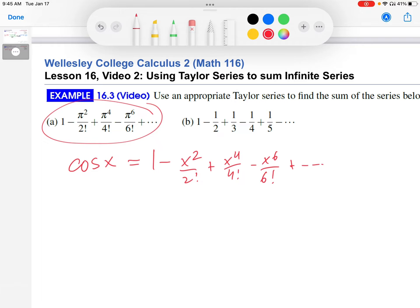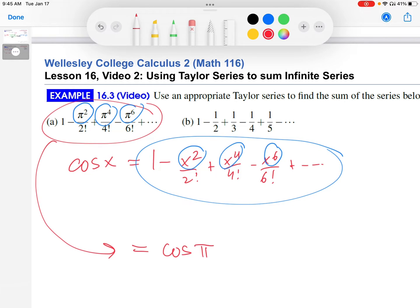So if you compare that to the infinite series for cosine of x, the only difference is that instead of pi squared, we have x squared. Instead of pi to the 4th, we have x to the 4th, and so on. So it really seems like this equals cosine of pi. Because, again, if we wrote out this series, looking at that one and plugging in here x equals pi, it would be 1 minus pi squared over 2 factorial plus pi to the 4th over 4 factorial, dot dot dot. And this is reproducing this series that we started with.